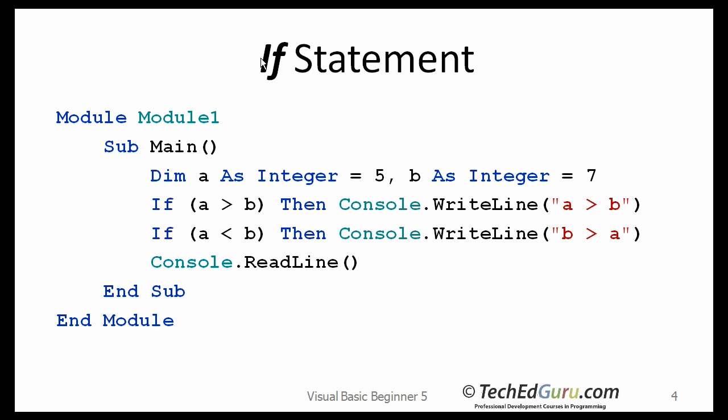Back to the if statement. If you want to selectively execute part of a program, one way to do that is to use the if statement. The if statement executes a block of code only if the specified expression is true. If the value is false, then the if block is skipped and execution continues with the rest of the program.